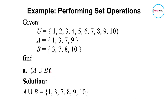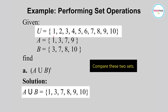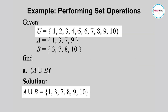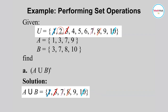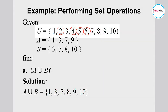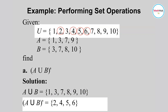After finding the union, we get its complement by going back to the universal set and comparing the elements. The complement will be the elements in the universal set that are not in the union. Therefore, the complement of A union B is the set containing 2, 4, 5, and 6.